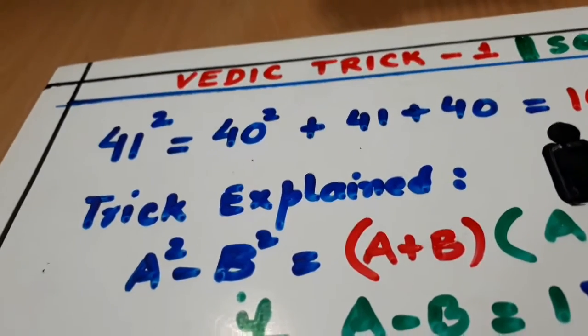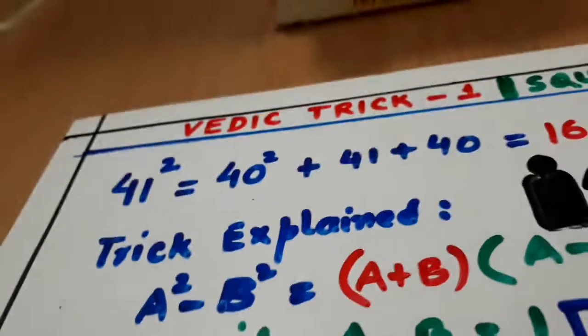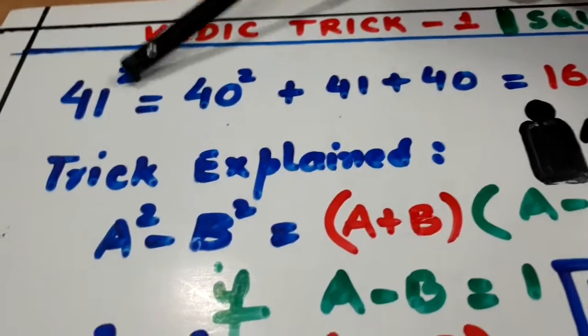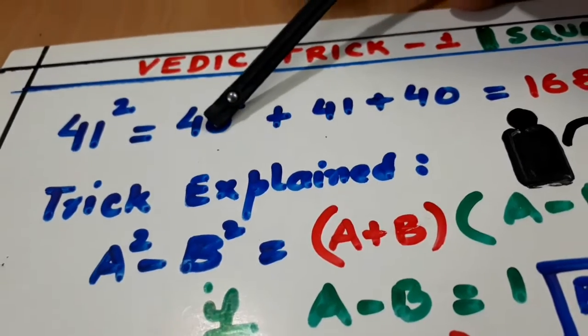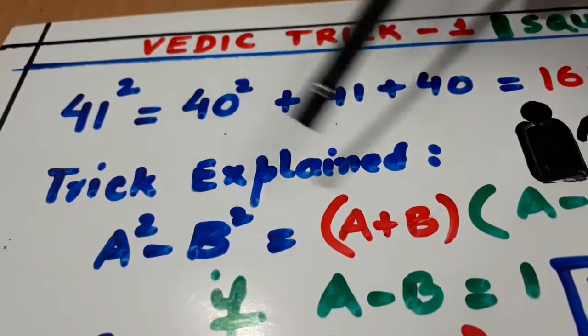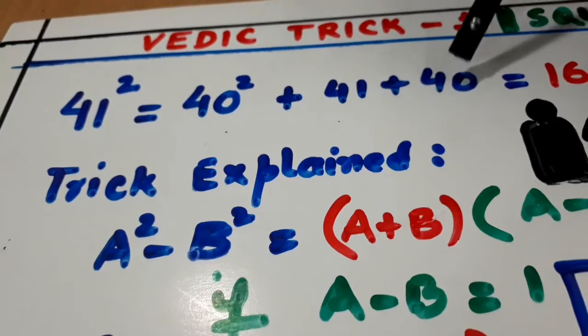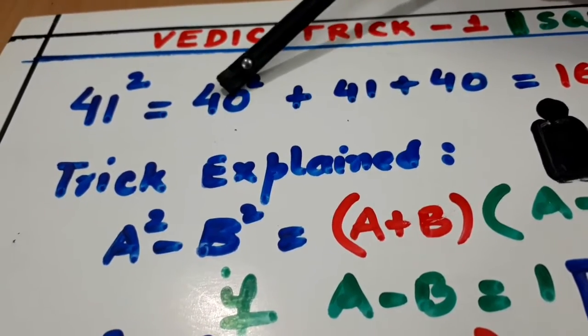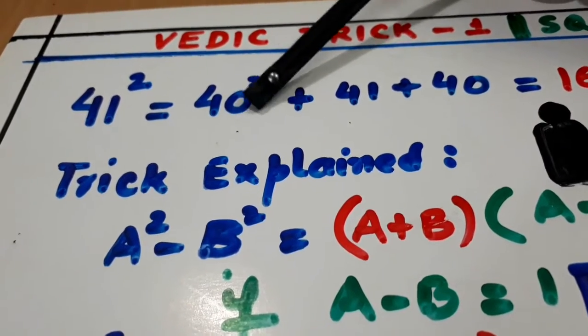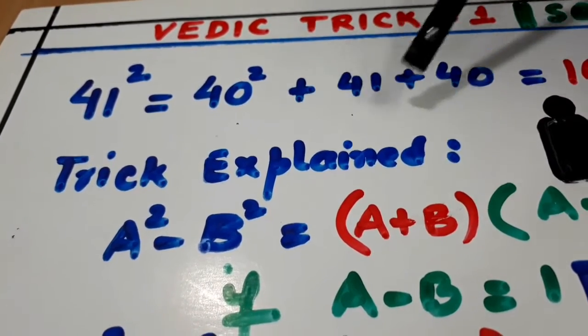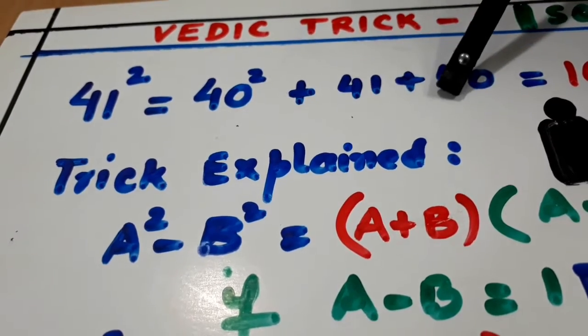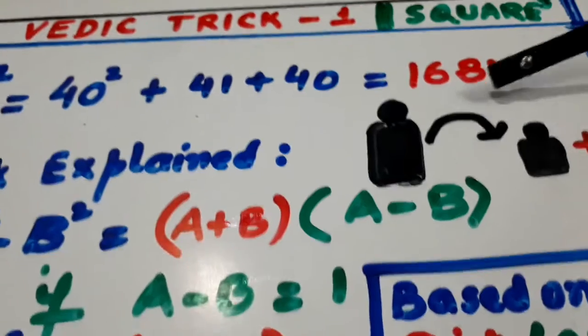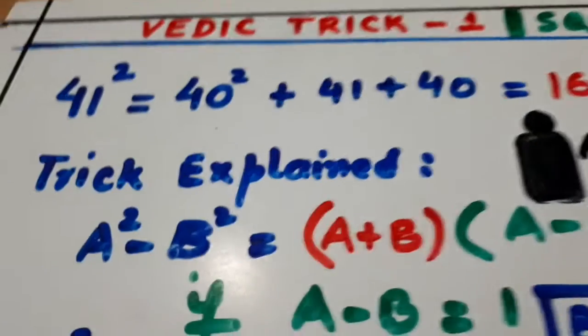If you want to know about 41 or 40, now 4 square is 16, 40 square is 1600. 41 and 40 is 81. The answer is 1681. Very simple.